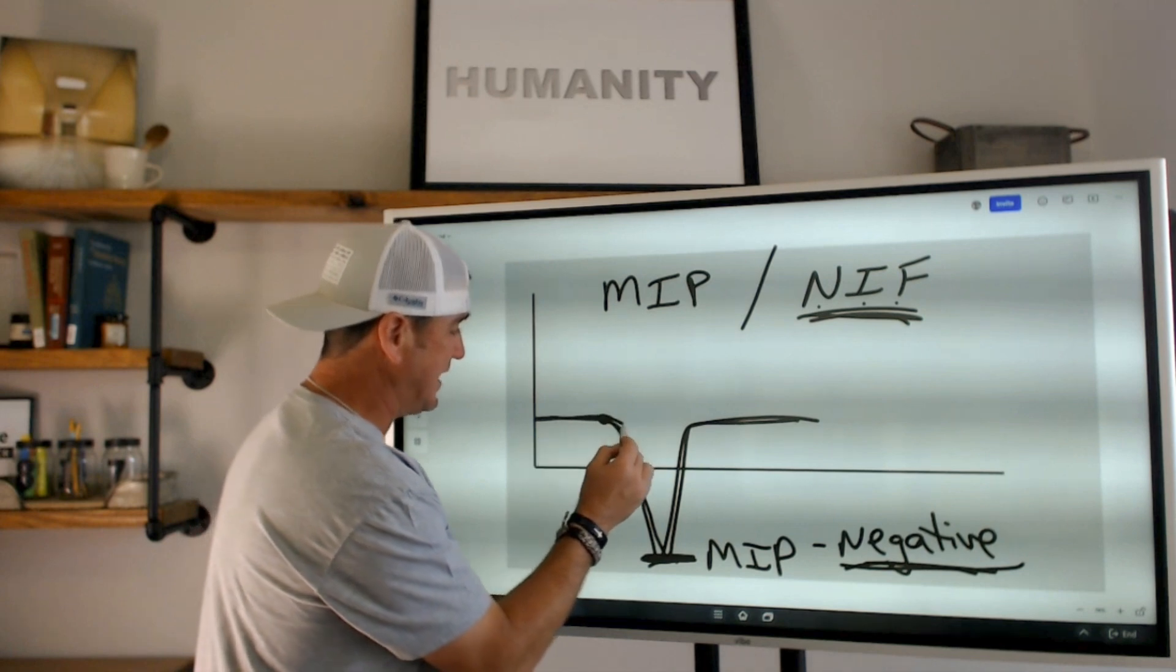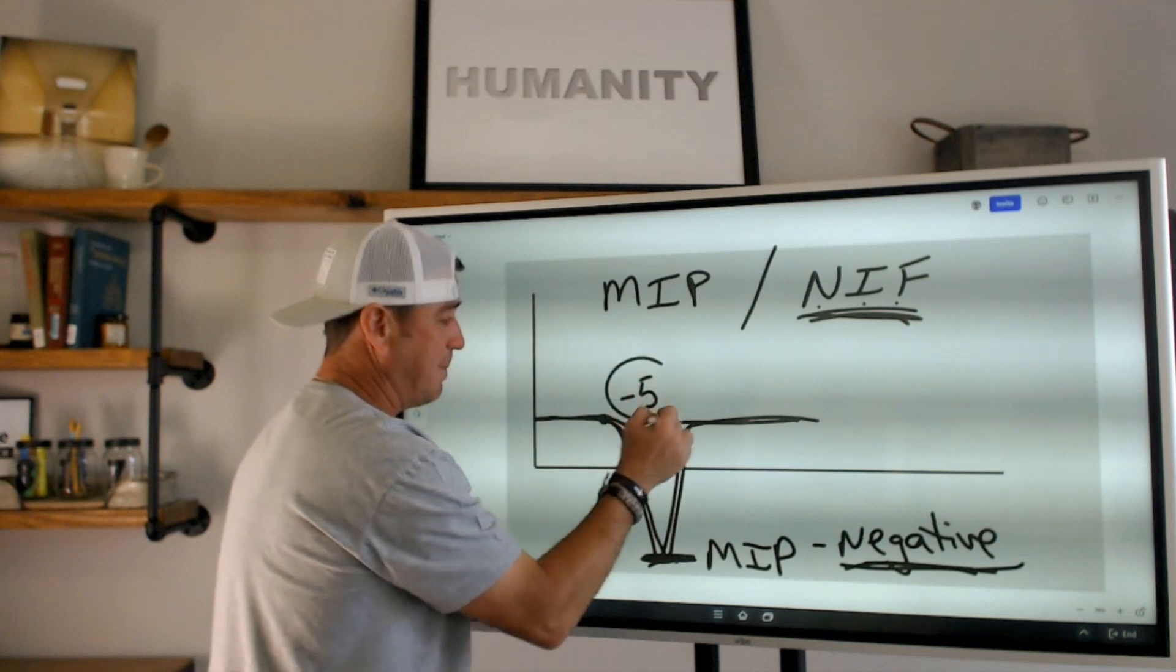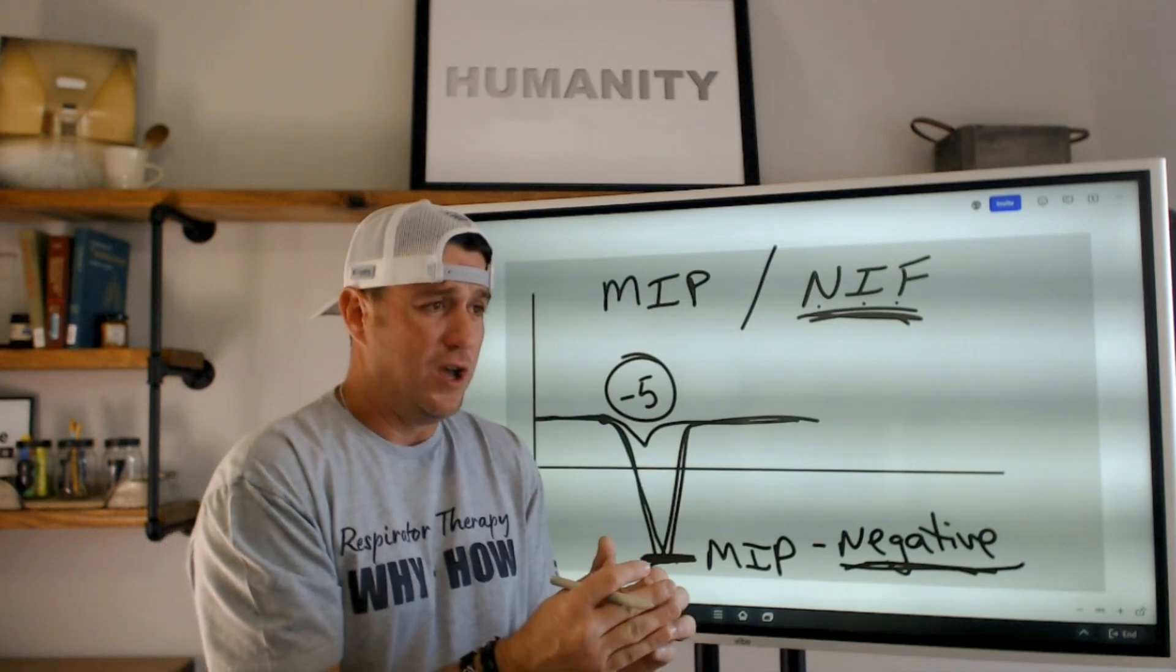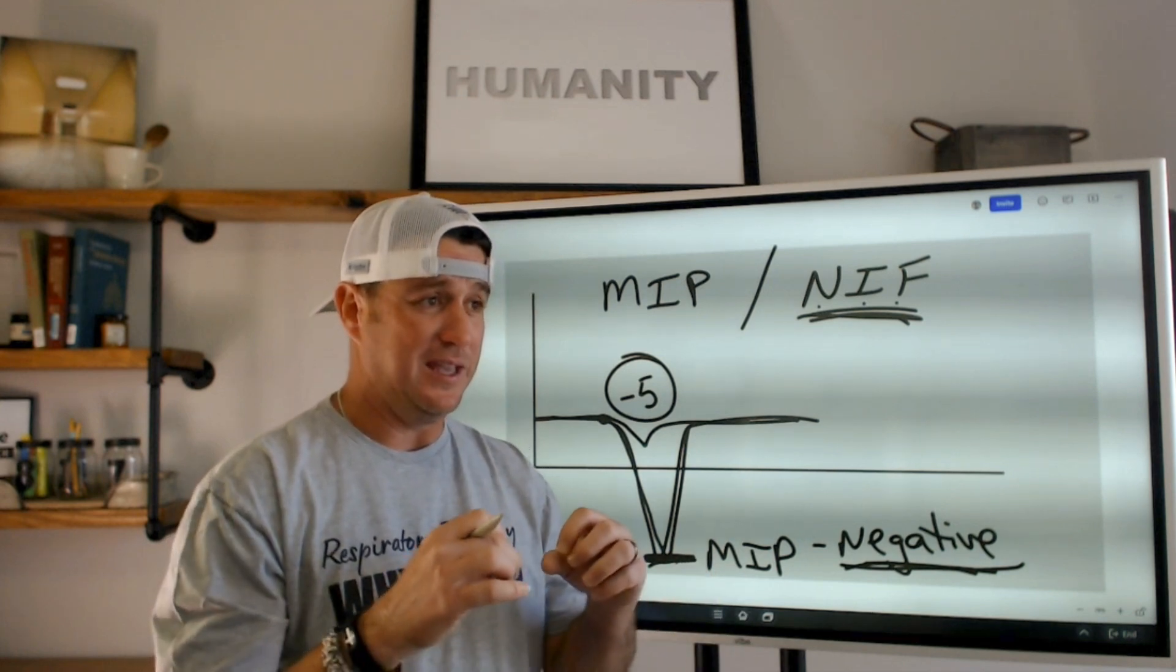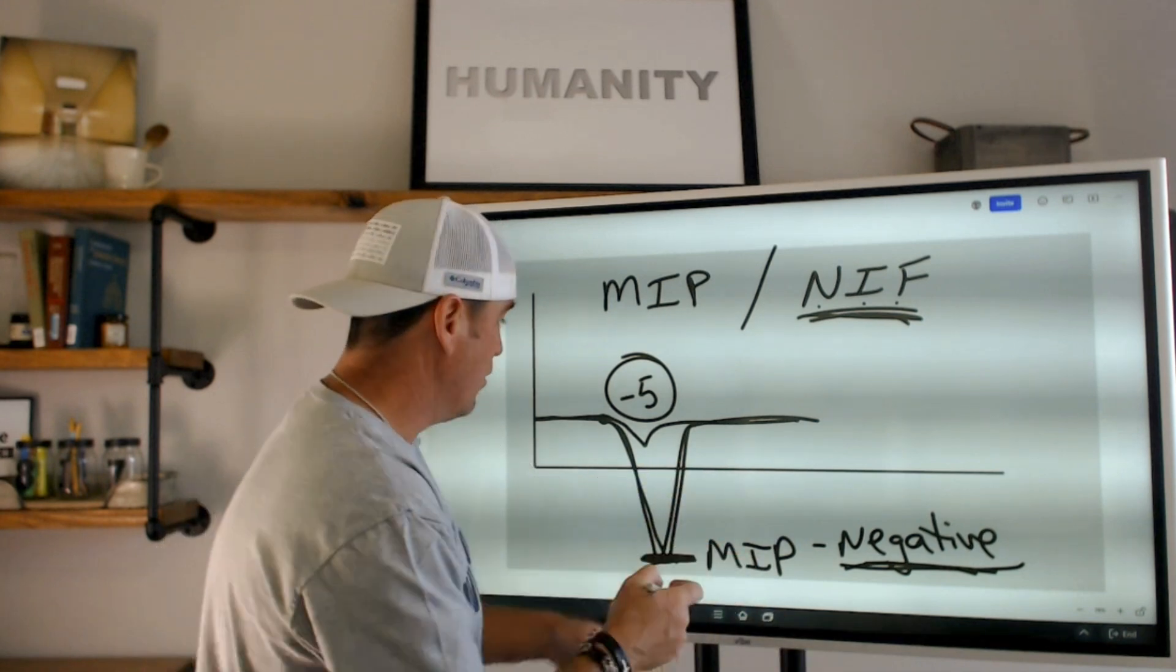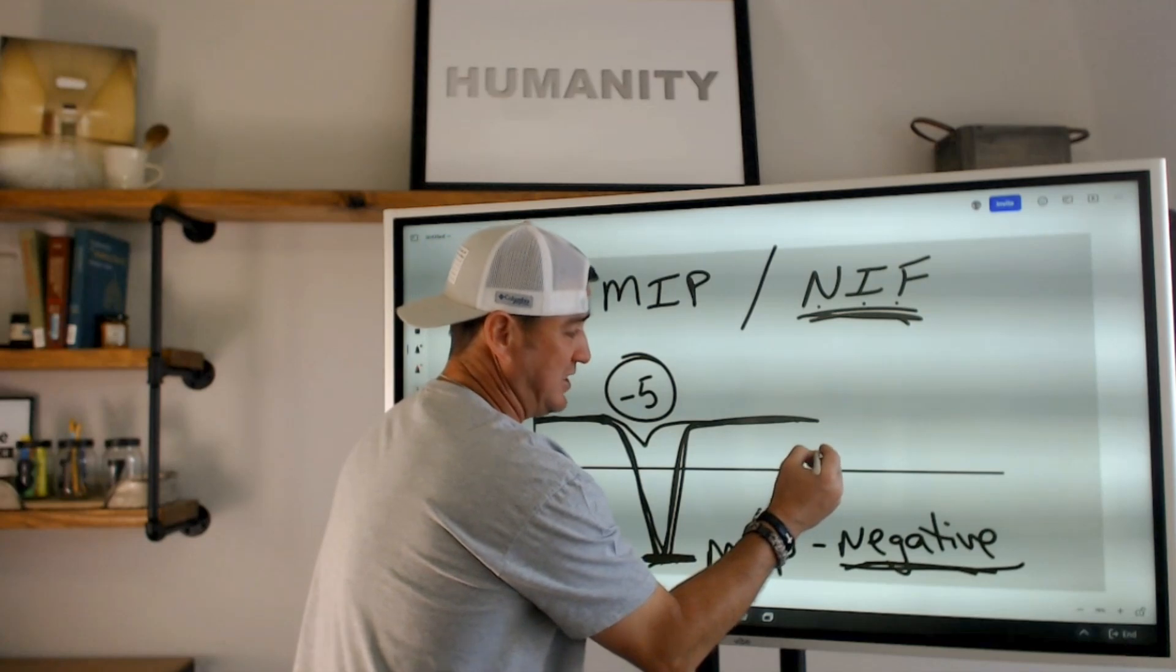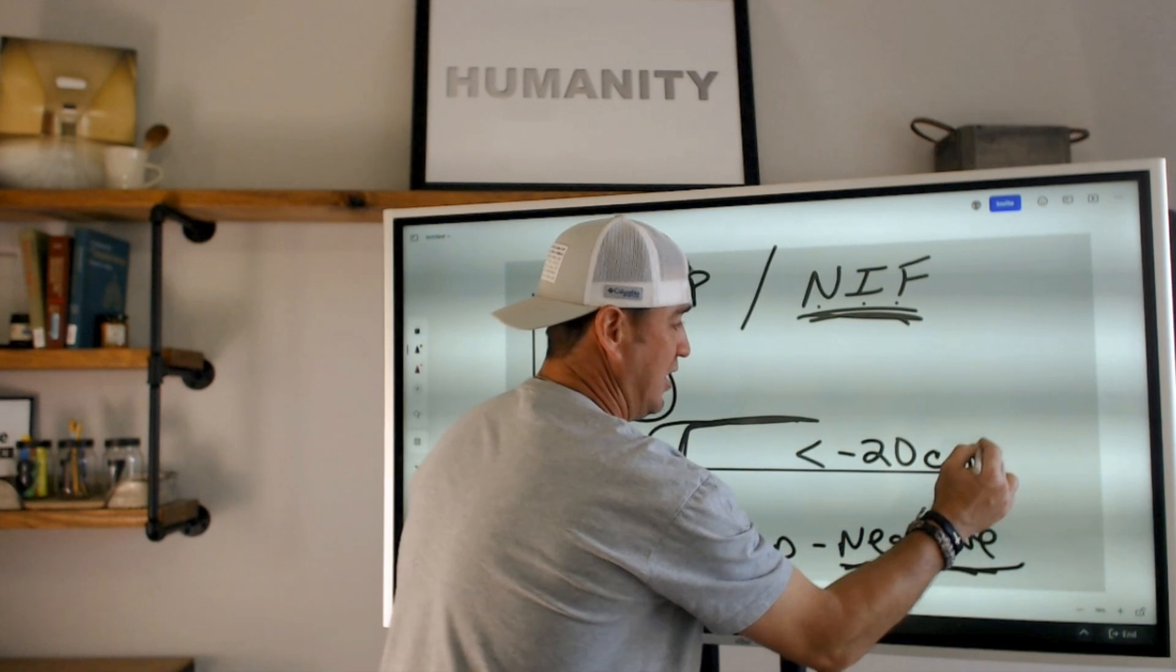You see, if somebody does a NIF and it comes down like this and comes back up and let's say that number is negative five, that's not a lot of strength, right? That's not a whole lot of pressure difference. And so that's not a good MIP. It's not a good NIF. That does not support what we would consider to be an indicator as a successful liberation from mechanical ventilation. You see, what you want is this drop to come down here and you want it to be more negative than negative 20. So essentially you want it to be less than negative 20. And this is centimeters of water pressure.